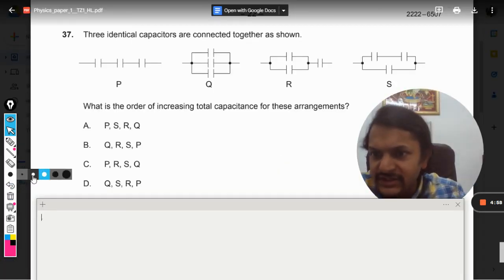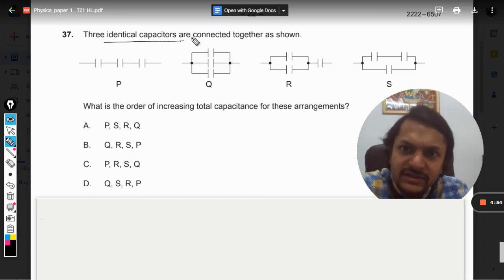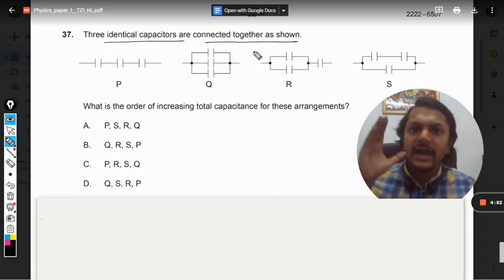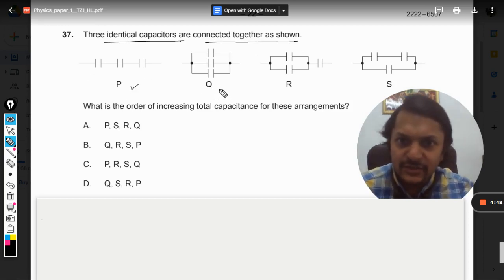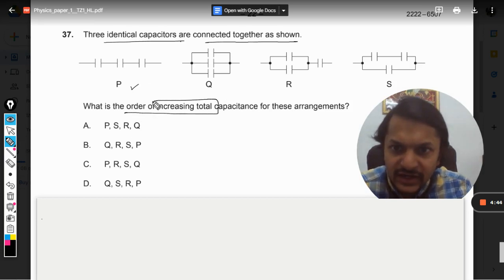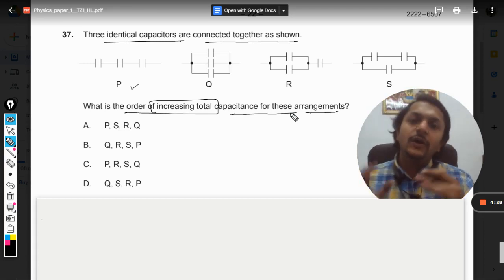Okay dear students, let us see what is there in this question. Three identical capacitors are connected together as shown. So in P all capacitors are in series, in Q all capacitors are in parallel, and then R and S. What is the order of increasing total capacitance of these arrangements? Very good, so let us see how to do this question.